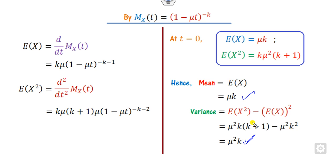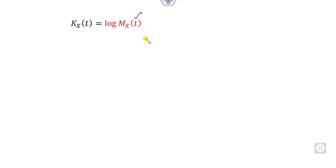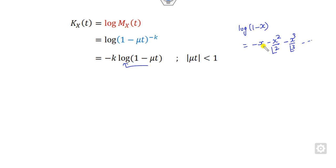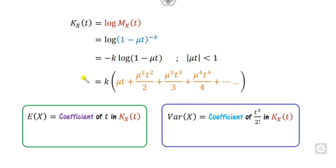Based on the mean and variance, you can also define the cumulant generating function, denoted K(x), which is defined as the logarithm of the MGF. Substituting the MGF and expanding log(1 minus x) as minus x minus x²/2 minus x³/6 and so on, and factoring out the negative sign, you get the cumulant series.